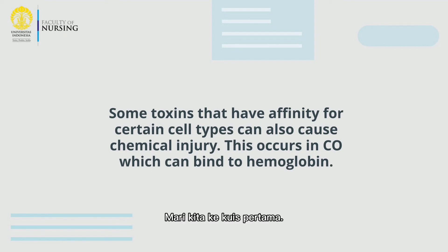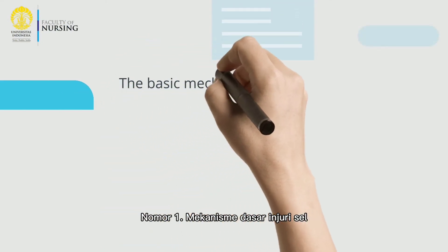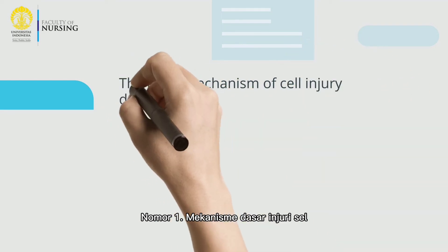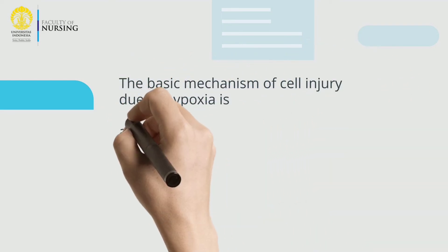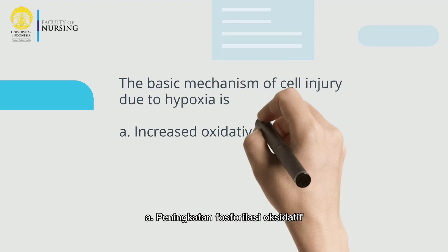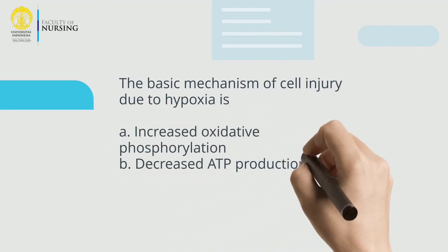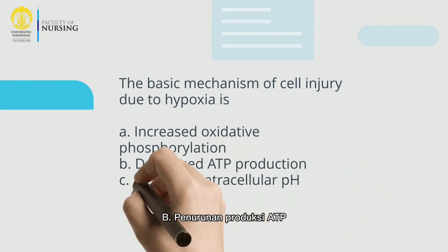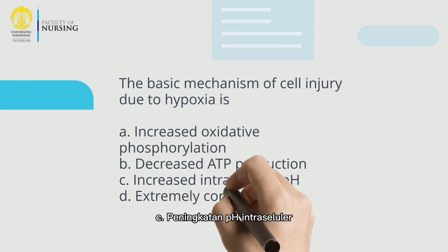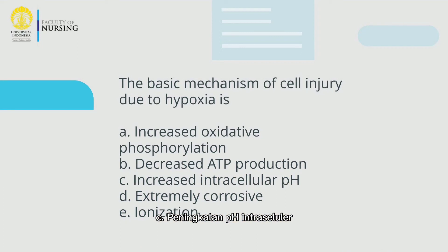Quiz 1: The basic mechanism of cell injury due to hypoxia is — A. Increased oxidative phosphorylation, B. Decreased ATP production, C. Increased intracellular pH, D. Extremely corrosive, E. Ionization.